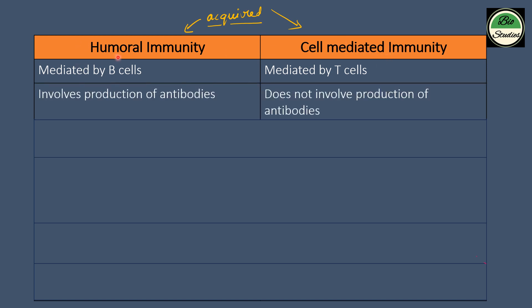The second difference: humoral immunity involves the production of antibodies. Cell-mediated immunity, on the other hand, does not involve the production of antibodies.